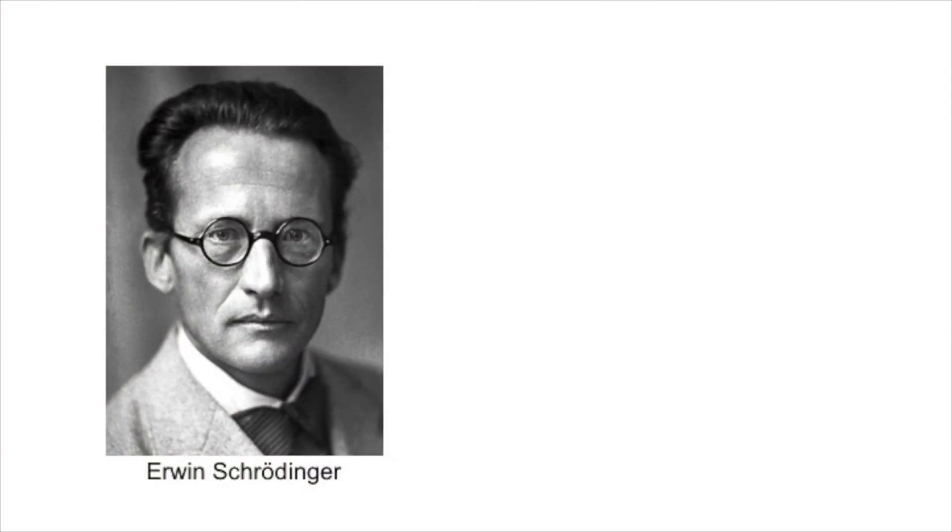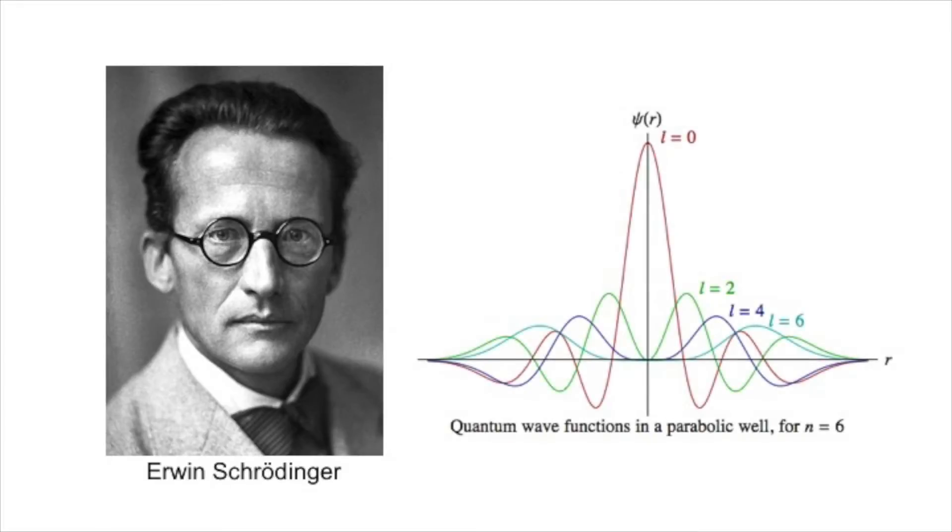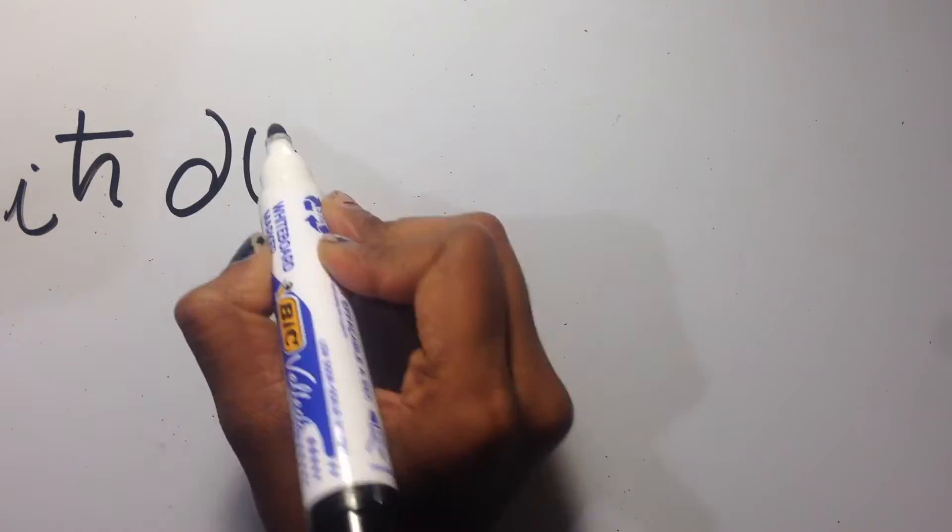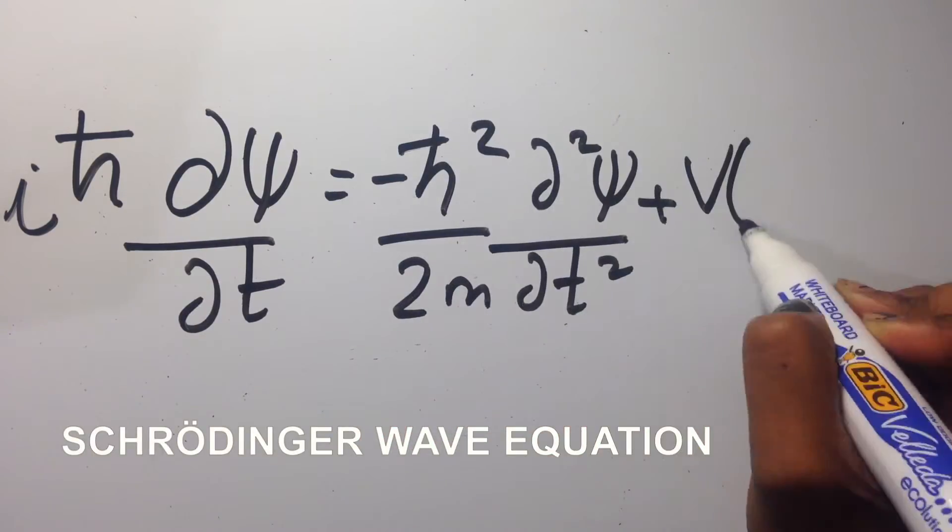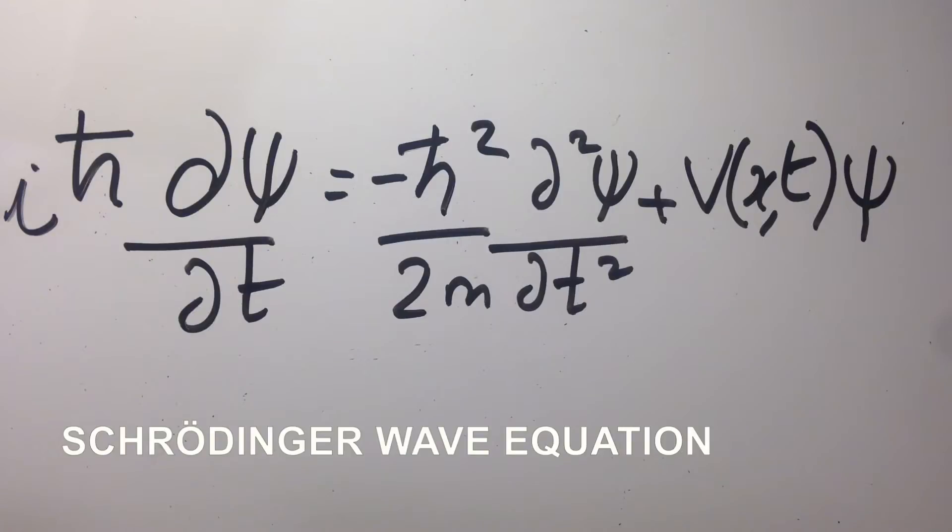It is used to find the allowed energies of a quantum mechanical system and the associated wave function that gives the probability of finding the particle at a certain position. It is important to note that Schrödinger's equation cannot be derived from any underlying physics principle. It is a statement of how physics works and can be viewed as a postulate. In today's video we are going to talk about how this equation is motivated.